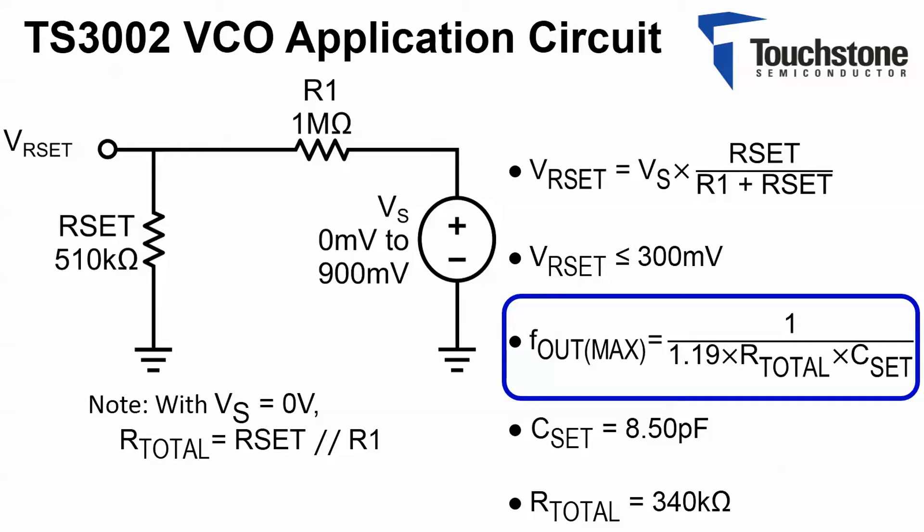The Fout frequency equation is given on page 8 of the TS3002's datasheet. From reviewing this equation, the maximum output frequency can be determined when the resistance seen by the RSET pin is at a minimum. This occurs when VS voltage is equal to zero, thereby causing R1 and RSET to appear in parallel.